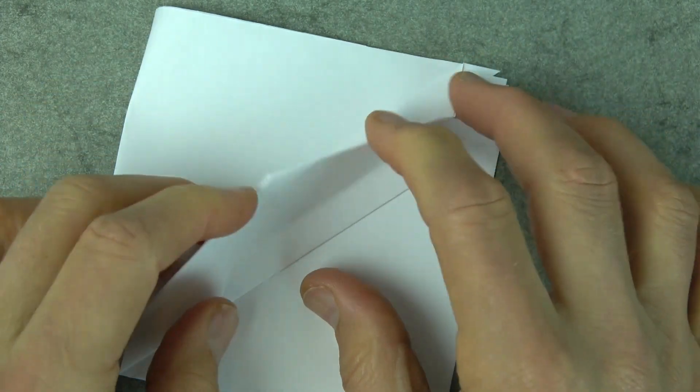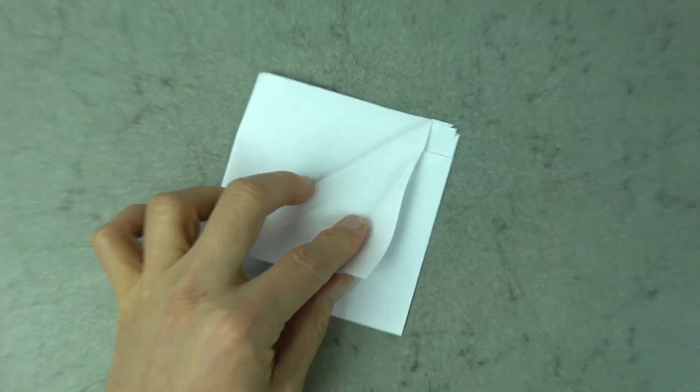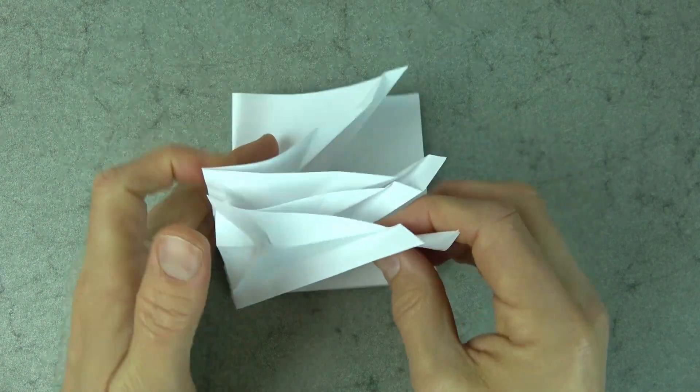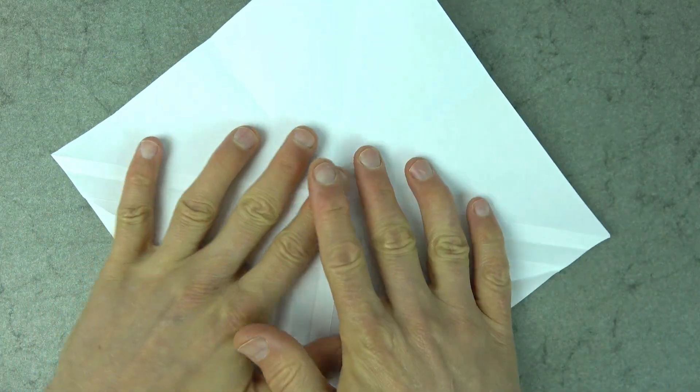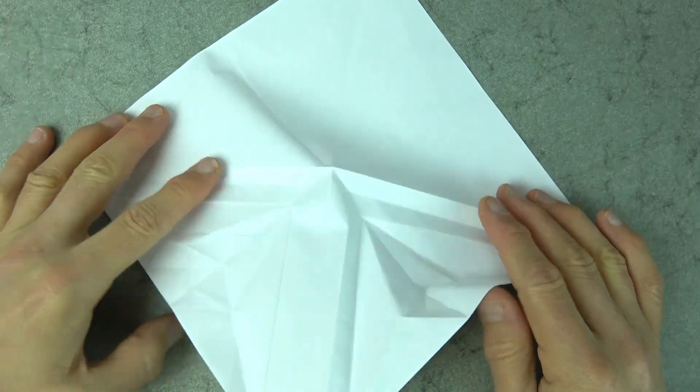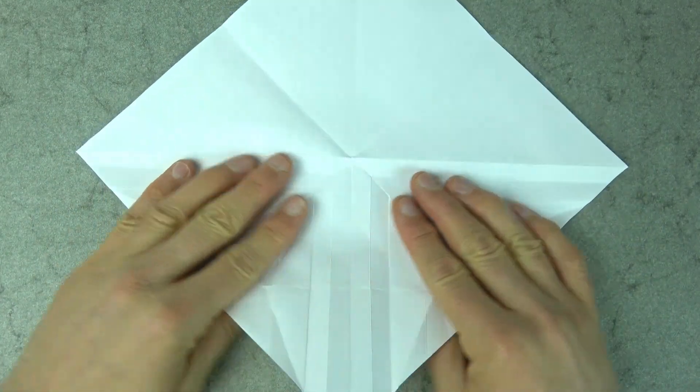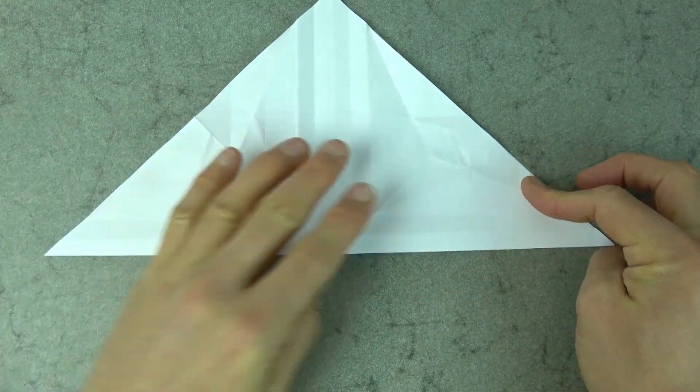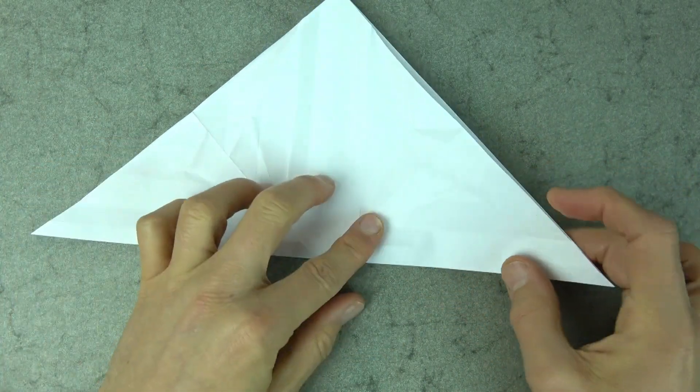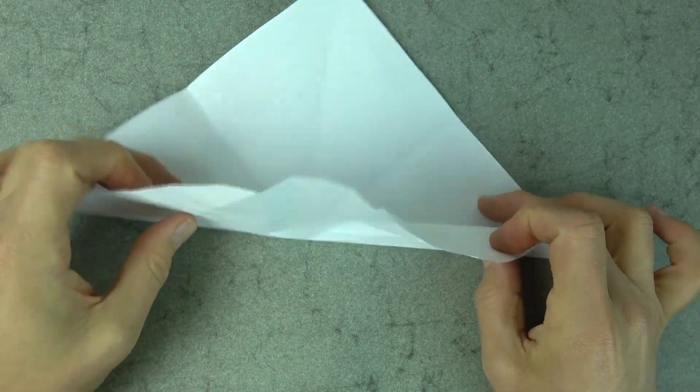Okay, now let's completely unfold. And we have all of the creases on this side. Let's fold the flap up. Fold it in half. And fold it in half. And unfold it.